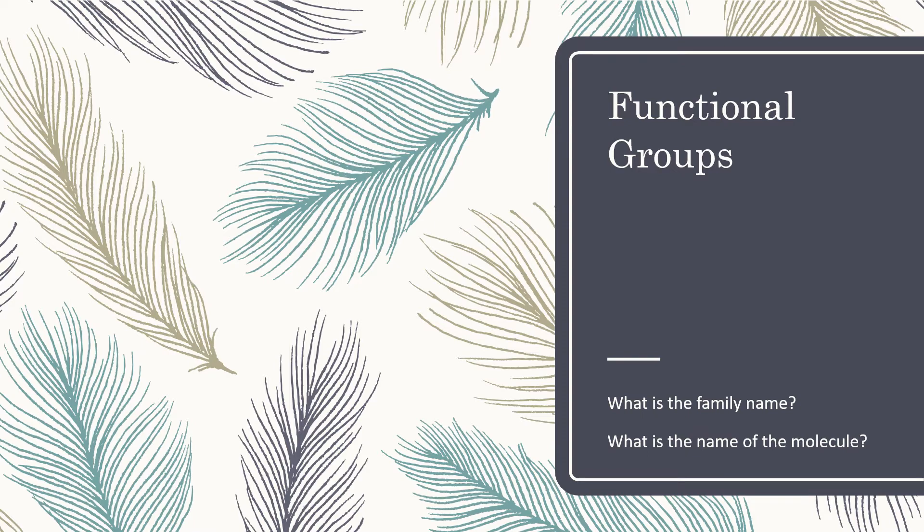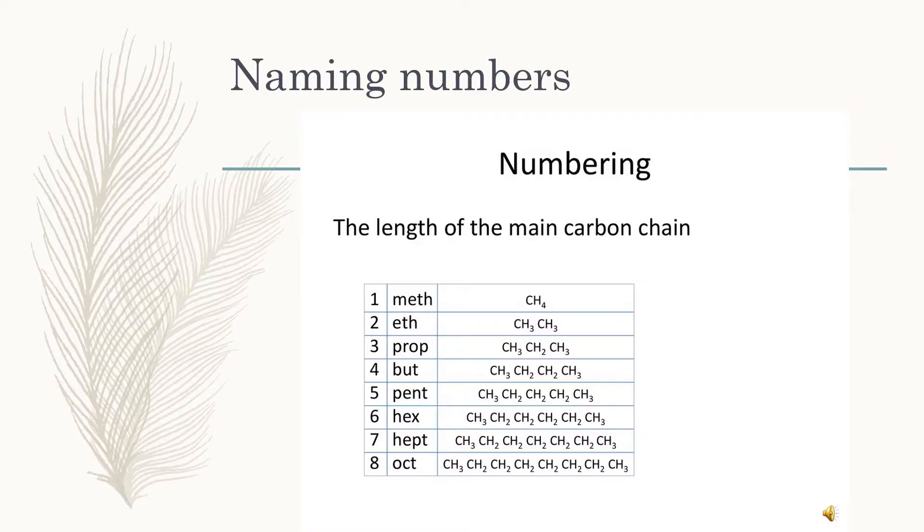When we're naming the size of the carbon chain, we don't name that in English. Instead, we have a different system. The shortest carbon chain, a single carbon surrounded by four hydrogens, is called a meth group. Two carbons, each with three hydrogens, is an eth group. Three carbons is prop, four is but, five is pent, six is hex, seven is hept, eight is oct, nine is non, ten is dec. It continues on that way. We mostly don't deal with anything bigger than eight in this class.